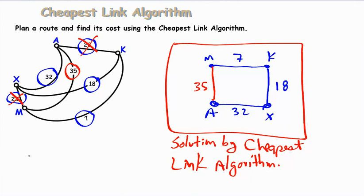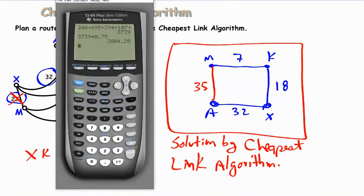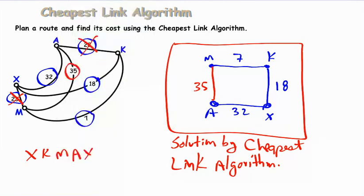And this is the solution using the cheapest link algorithm. So we'll say that we started at X to K to M, so we'll say X, K, M, A, X. And we can add up all of the weights for these edges and we get 92. And as we've said before with our algorithms, they may not be the optimal solution, but they are an efficient solution. It gives us an efficient way to plan the route, and we will guarantee that we do not get the most expensive route in the process. We may or may not get the optimal, but it's okay not to have the cheapest route as long as we're not paying for the most expensive.